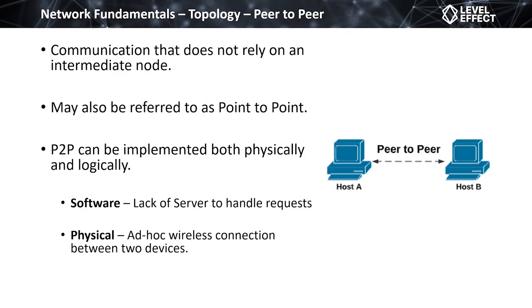We also have a physical representation of a peer-to-peer or point-to-point network: an ad hoc wireless connection. You can get two laptops to directly talk to each other over a wireless signal. This is a unique ad hoc wireless configuration that doesn't have an access point to handle intercommunications — the devices talk directly to one another.